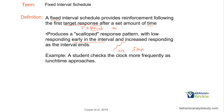For example, a student checks the clock more frequently as lunchtime approaches. At 9 a.m. the student may check the clock only a few times, but as lunch at 12 p.m. gets closer they start checking more frequently. It doesn't matter if the student checks the clock 100 times — they're not getting reinforced until that set amount of time passes.